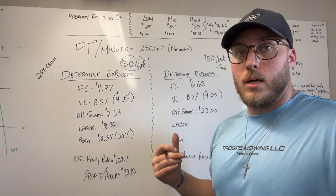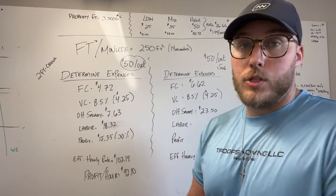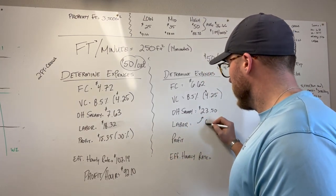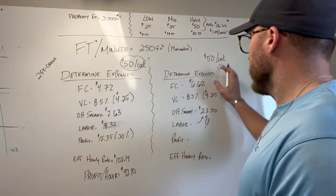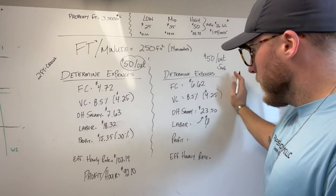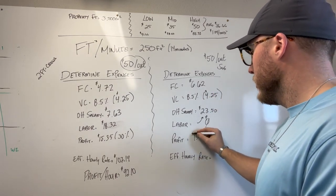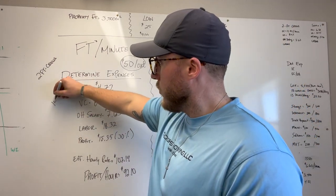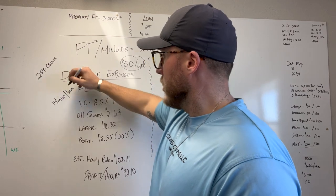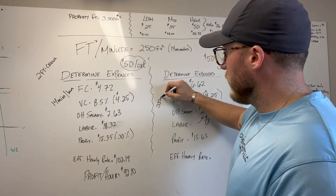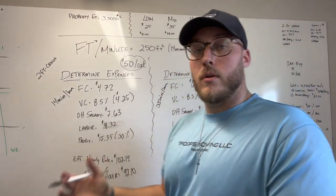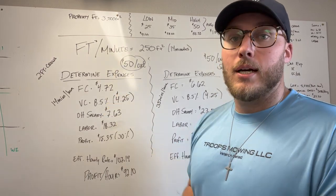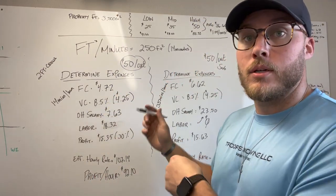For labor on the solo side, it's really just your salary - if you had somebody else with you, you would take that 33% and divide it by two since you're technically the other person. But in this instance, the labor cost is $0 since it's captured in your salary. So now we take revenue minus expenses to get our profit. Interestingly, profit is relatively similar to the two-crew scenario. The difference is that on the two-crew side this was taking 14 minutes per lawn, whereas for solo it's taking 35 minutes per lawn. If you're super efficient, obviously this can change your pricing.